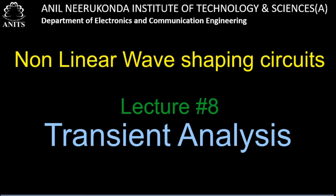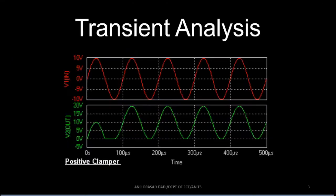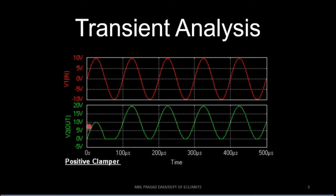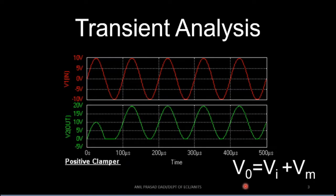Welcome back to the course Electronic Circuits and Analysis One. In today's lecture we are going to discuss transient analysis. Let us consider a positive clamper whose input and output are shown here. The input is the red curve varying from minus 10 volts to plus 10 volts, and the output is the green curve varying from 0 volts to 20 volts.